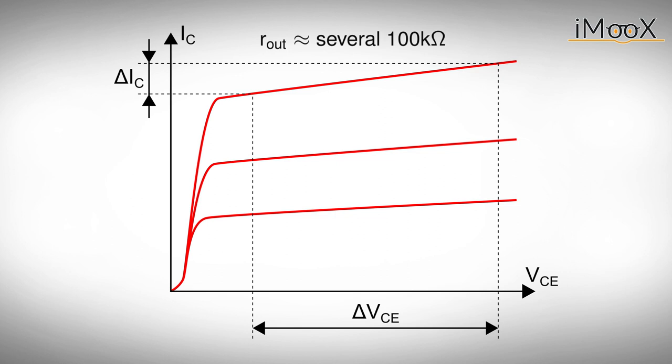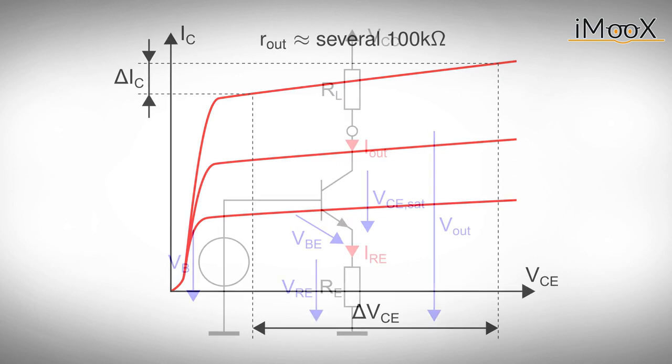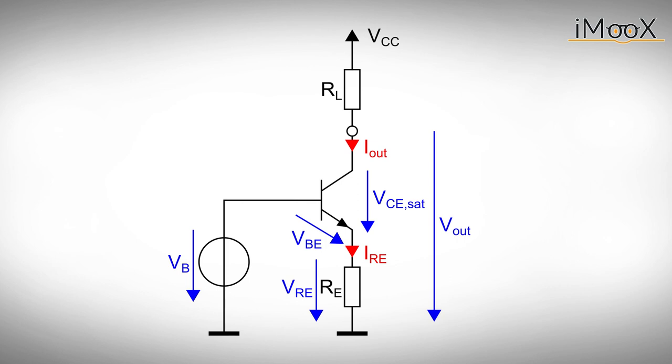To circumvent this problem we try to stabilize the collector emitter voltage. When we achieve a constant output current, also the voltage drop over RE is constant and the potential at the emitter is stabilized. Thus it is sufficient to pin the potential at the collector of our current controlling transistor.